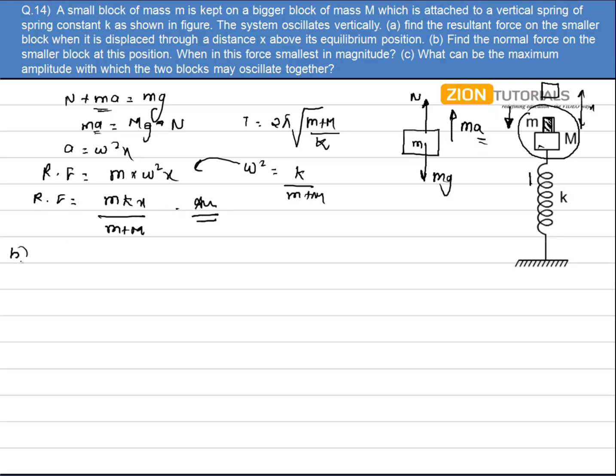And in second part I have to calculate the normal force on the smaller block. So normal force is given by mg minus ma. It can be written as mass into g minus omega square x. Let's substitute the values. I have mg minus kx divided by m plus capital M. That is the answer for the second part.